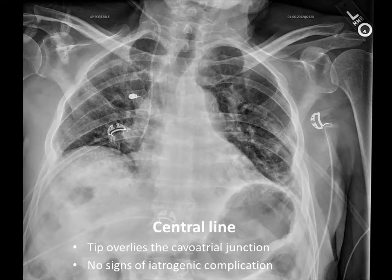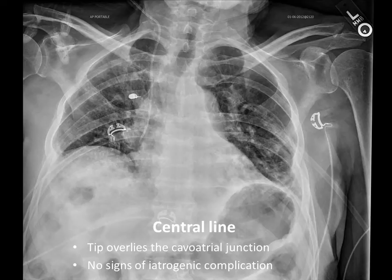Our first example is a central line. You want to confirm it's a central line, coming from the approximate location of the internal jugular vein, and terminating at the cavo-atrial junction. You'd also want to look for iatrogenic processes: starting in the neck, look for subcutaneous air — linear or streaky hypodensities indicating air in the soft tissue — and make sure there's no pneumothorax, where you'd see hypodensity expanding the pleural space as the lung shrinks back.